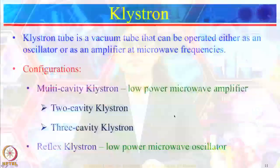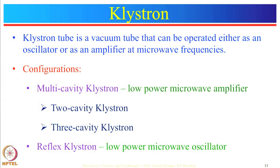Let us start with the klystron. A klystron tube is a vacuum tube that can be operated either as an oscillator or as an amplifier at microwave frequencies. In klystron there are two configurations: a low-power microwave amplifier — the multi-cavity klystron — and a low-power microwave oscillator — the reflex klystron. Let us start with the multi-cavity klystron first.